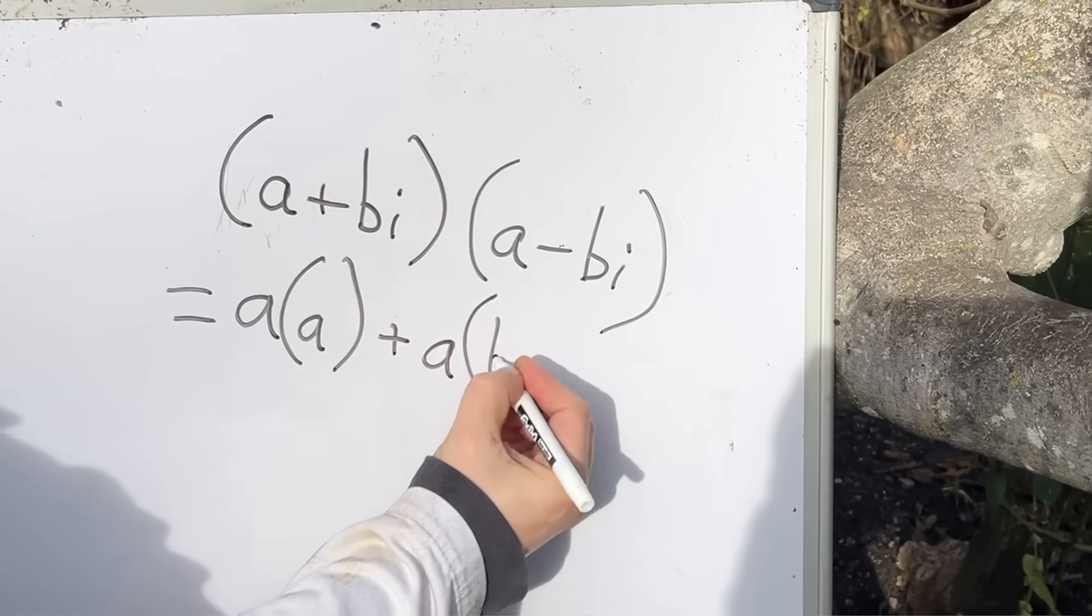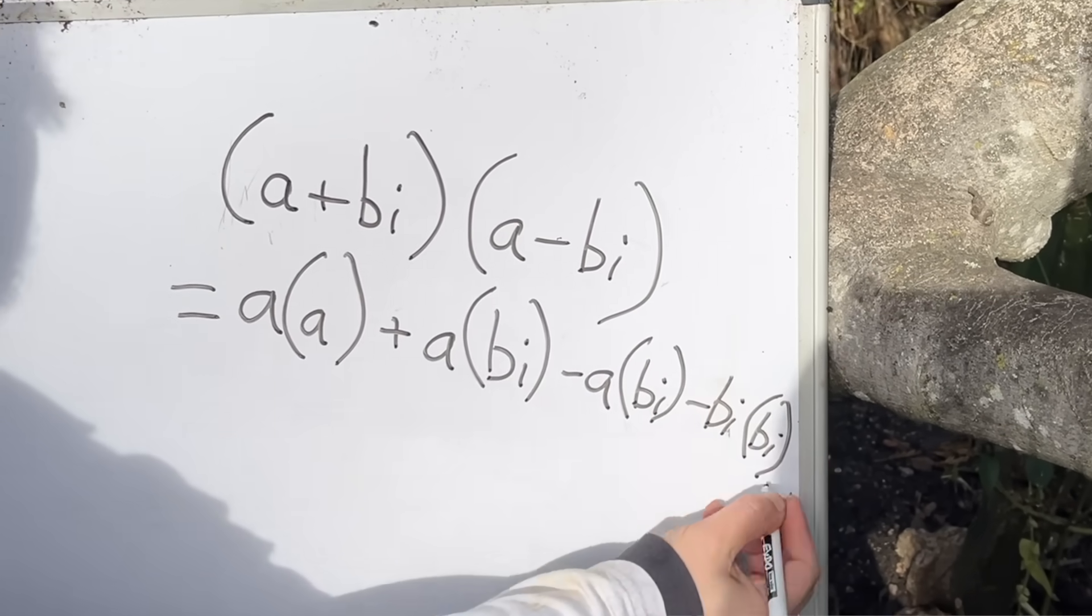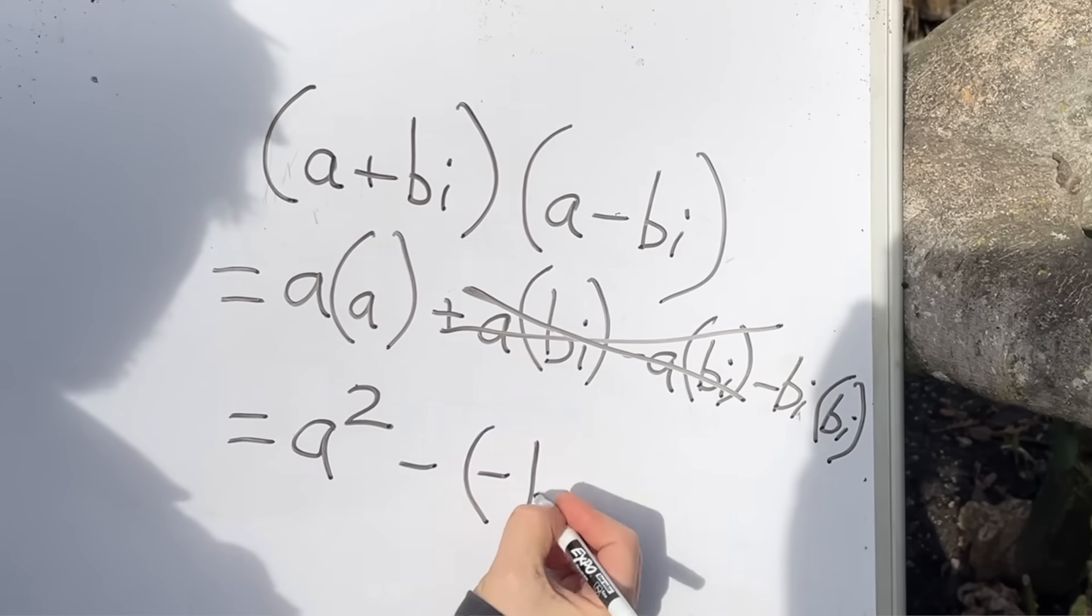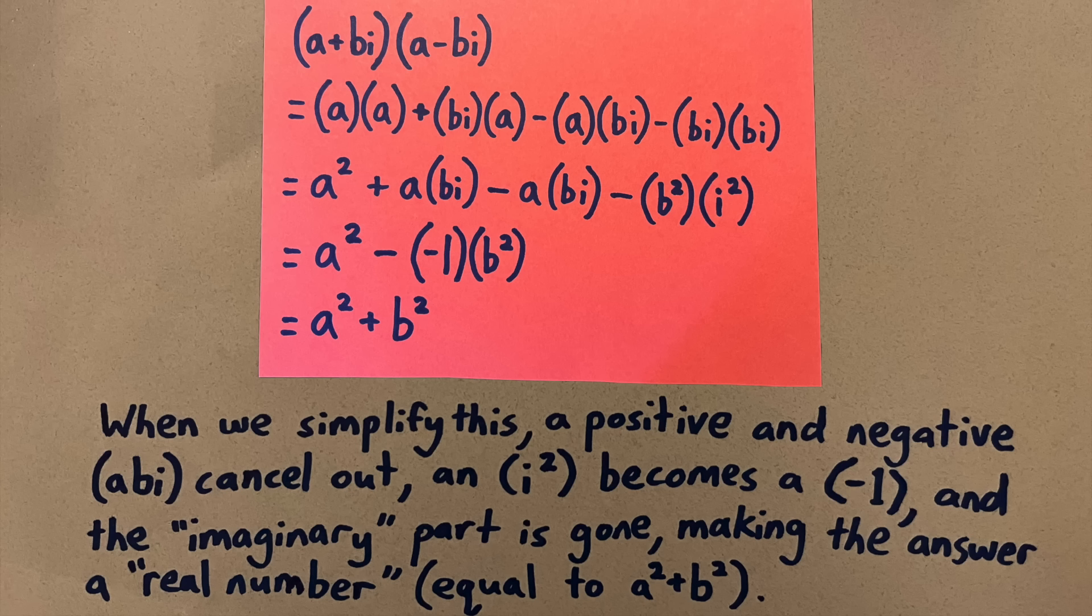Basically the same thing, but with the imaginary portion having its sign flipped. Well, if we multiply together two numbers of this form, we get something neat. All the imaginary stuff here cancels out, leaving us with just a real answer.